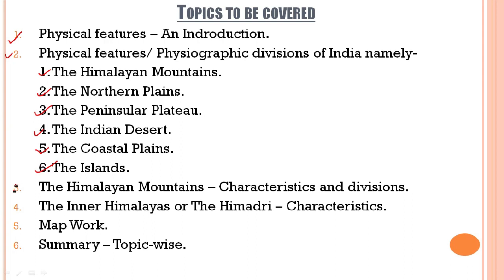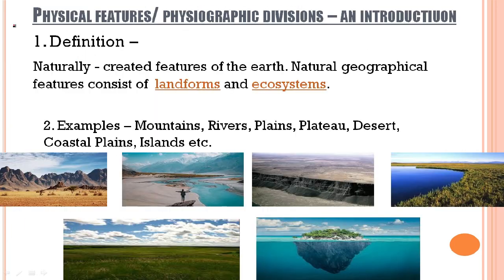Number three, the Himalayan mountains, its characteristics and divisions. Number four, the inner Himalayas or the Himadri and its characteristics. Number five, map work. And number six, summary. Topic-wise, let us begin with the physical features.